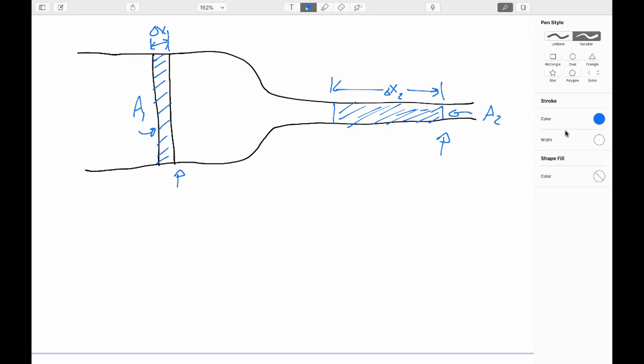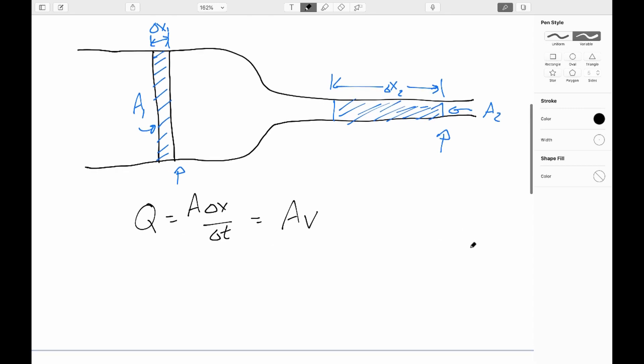So we define the volumetric flow rate Q to be the volume that passes by this location in amount of time. Well, if you think about that, that's going to be the volume is going to be A times delta X over delta T. So we can say that the volumetric flow rate is A times V. And by the way, this symbol doesn't get used very much, and we'll be recycling it very quickly to be used for heat transfer. There are historic reasons why the symbol is the same, but I'm not getting into those.